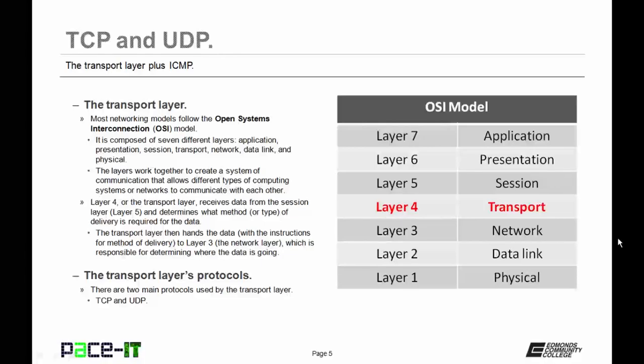Layer 4, also known as the transport layer, receives data from the session layer, which is layer 5, and determines what method or type of delivery is required for the data. The transport layer then hands that data, with the instructions for the method of delivery, to layer 3, which is also known as the network layer, which is then responsible for determining where the data is actually going.